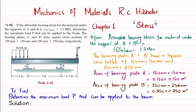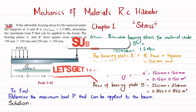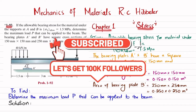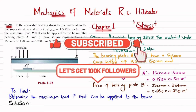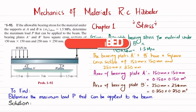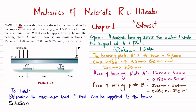Welcome back. Problem 1-92. This problem is taken from chapter 1, that is Stress, and the book name is Mechanics of Materials by R.C. Hibbeler. The statement is: if the allowable bearing stress for the material under the support at A and B is 1.5 MPa, determine the maximum load P that can be applied to the beam.